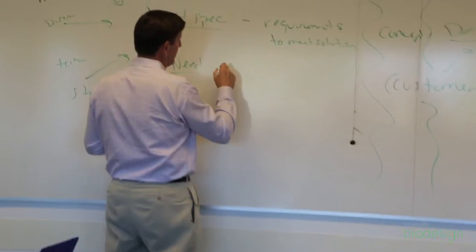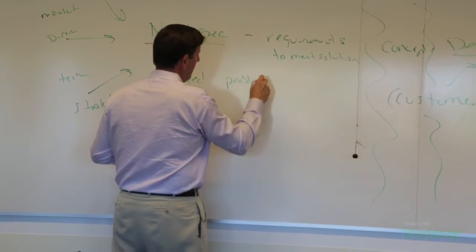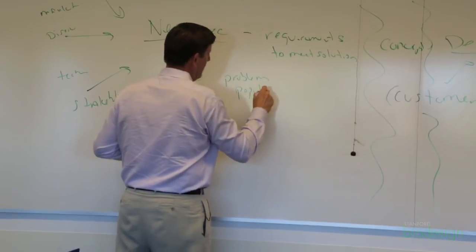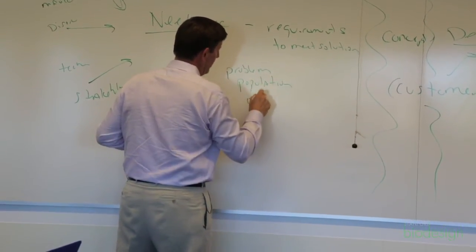So we start with the need. The need has those critical parts, which is the problem, the population, and the outcome.